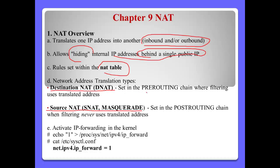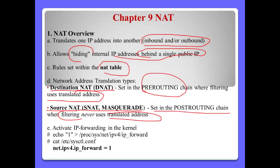Destination NAT can be used in the PREROUTING chain, and filtering uses translated addresses. Source NAT is set in the POSTROUTING chain and can only be used in the post-routing chain. For Source NAT, filtering never uses translated addresses. We can use Source NAT or masquerade.